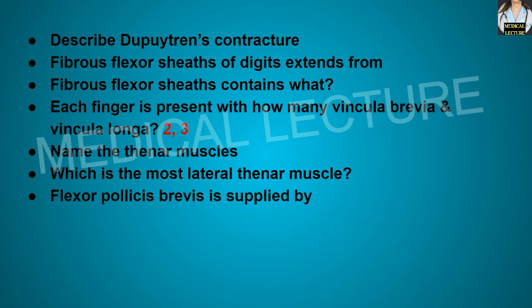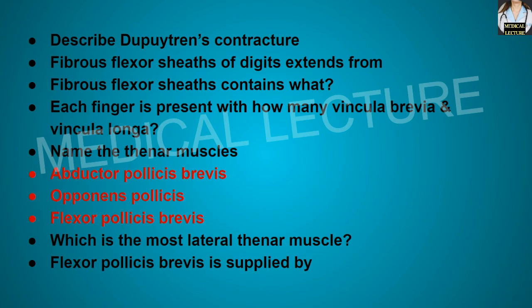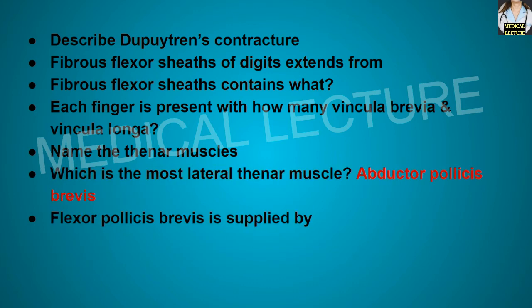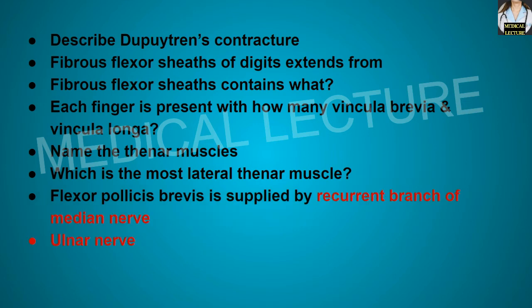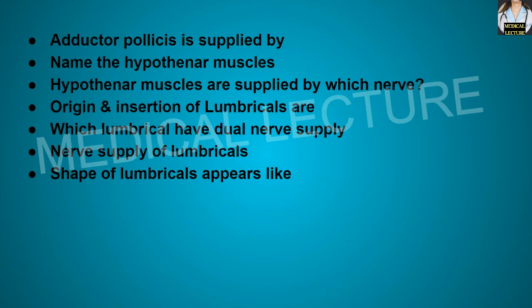Name the thenar muscles. There are three thenar muscles: the abductor pollicis brevis, opponens pollicis, and flexor pollicis brevis. The most lateral thenar muscle is the abductor pollicis brevis. Flexor pollicis brevis is supplied by the recurrent branch of the median nerve and also the ulnar nerve. Adductor pollicis is supplied by the ulnar nerve.